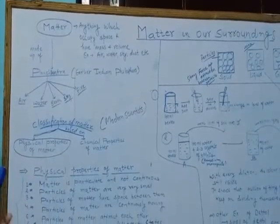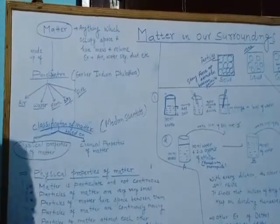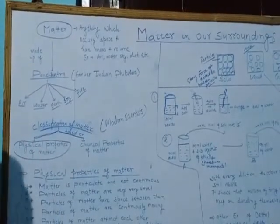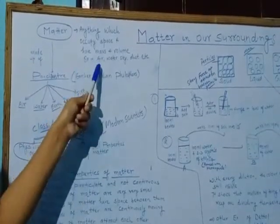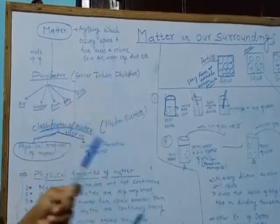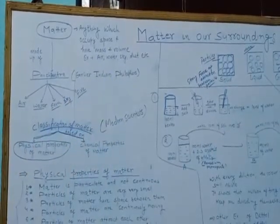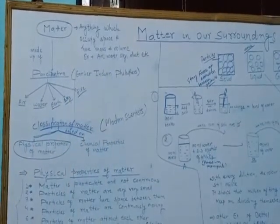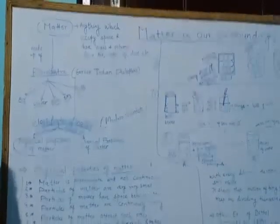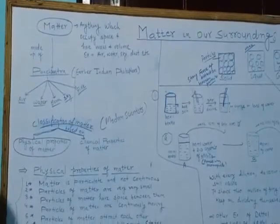Any solid, liquid, or gas substances are categorized under matter. The air we breathe, the water in our surroundings, the sky, the dust, pen, pencil, plants, humans — everything is categorized under matter.